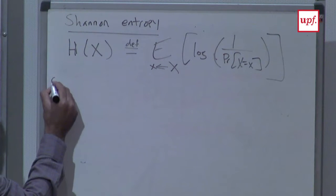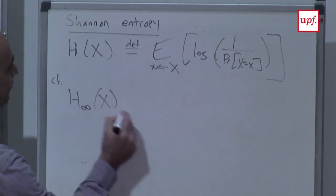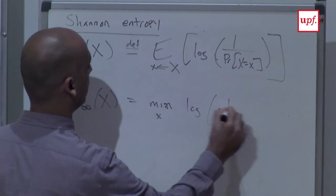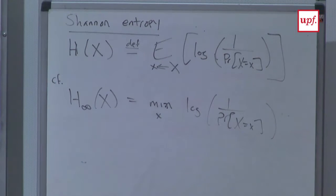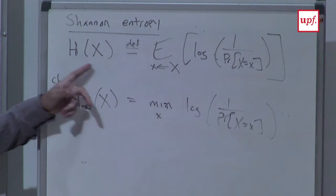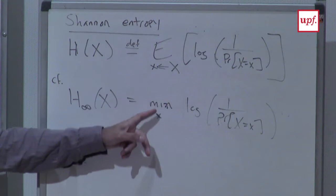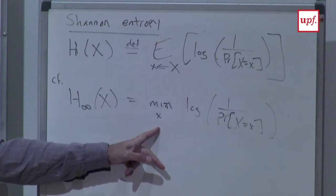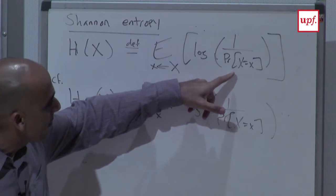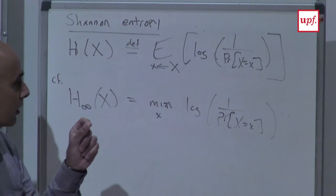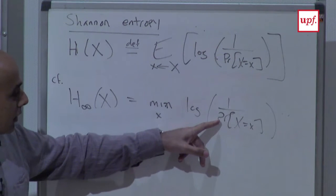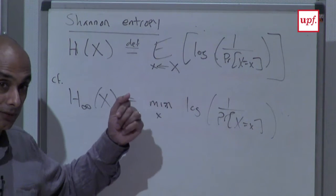You can think of log of the reciprocal of the probability mass as measuring how much randomness is in that particular sample little x. We take the average of that for Shannon entropy, and for min-entropy we say every sample should have a lot of randomness if we want the min-entropy to be large.